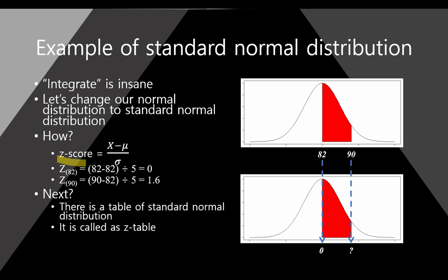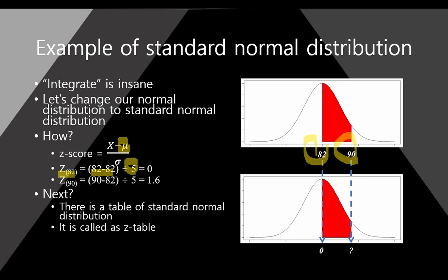So we need to change our numbers — our math scores — to standard normal distribution numbers. That is the G-score. G-score is x minus mu (this is the mean value), divided by sigma (this is the standard deviation). So here, let me see — we have two numbers, 82 and 90. The G-score of 82 is 82 minus 82, because mean is 82, divided by 5 — that is 0. So this number is changed to 0, because the center is the mean. And next, the G-score of 90 is 90 minus 82 divided by 5, and this is 1.6. So it means that this number is 1.6.